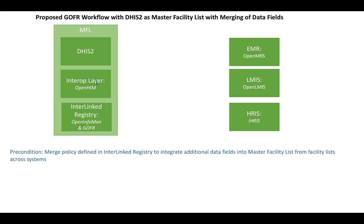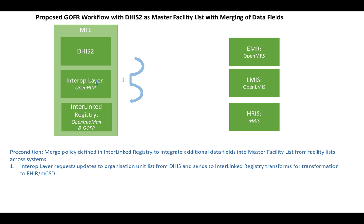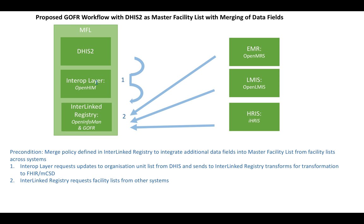In this case, we have as a precondition that we've defined a merge policy between the master facility list and the additional data fields that come in from other potential data sources. We start out similarly to the previous model, where the interoperability layer requests updates from the organization unit list from DHIS2 and sends it into the interlinked registry for transformation into the FHIR MCSD standard. Next, the interlinked registry requests lists from the other systems that have facility data.